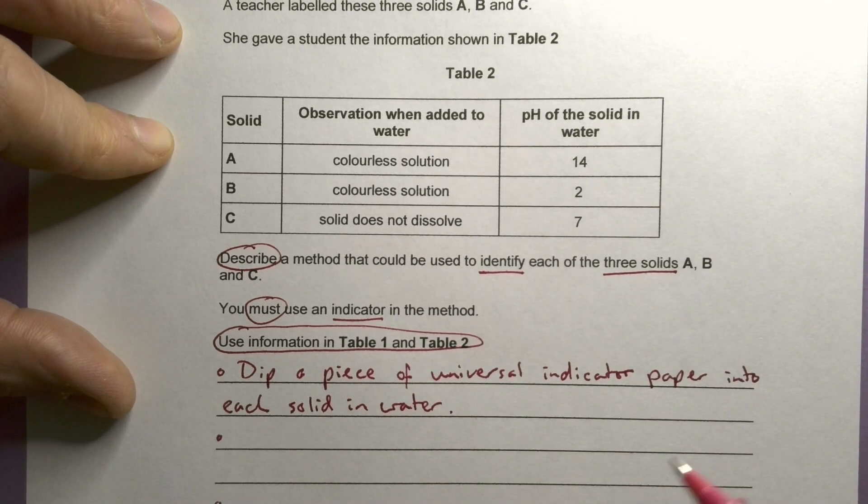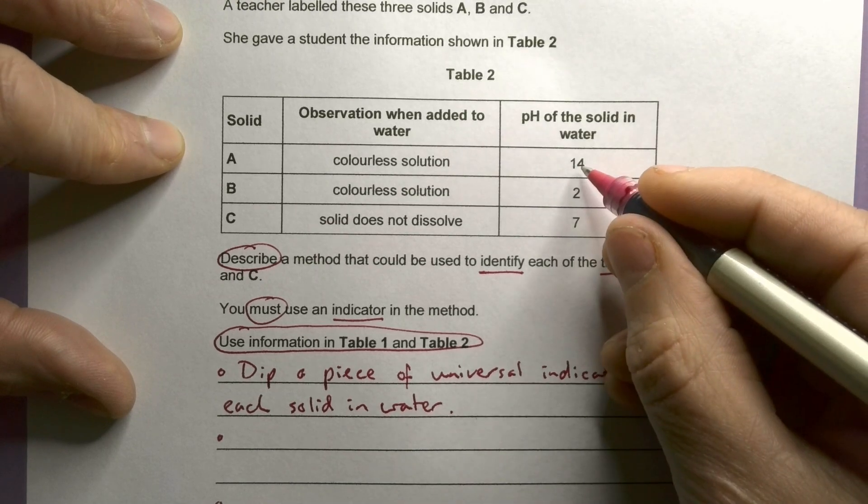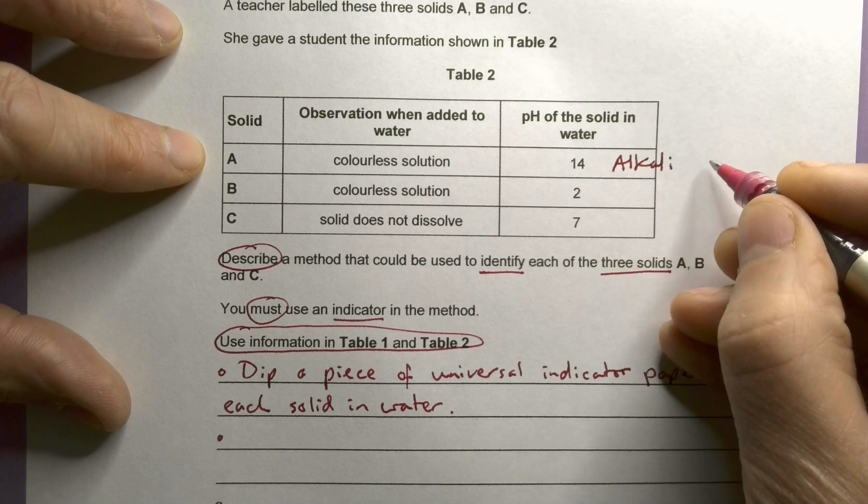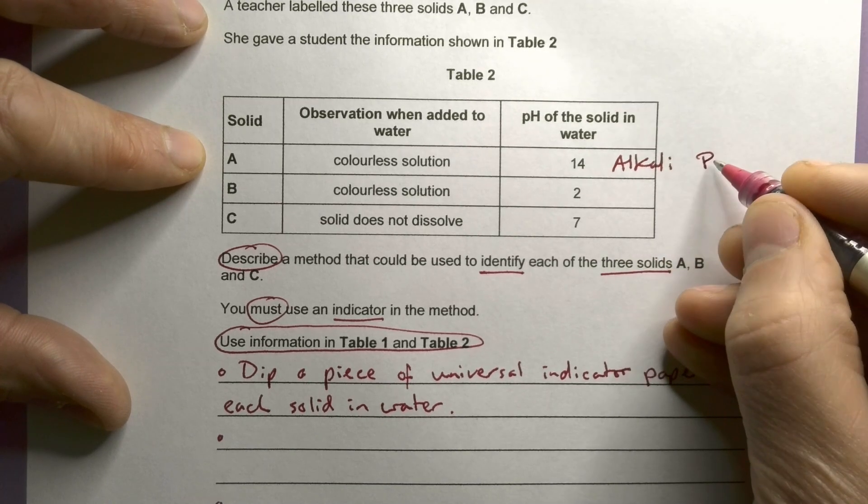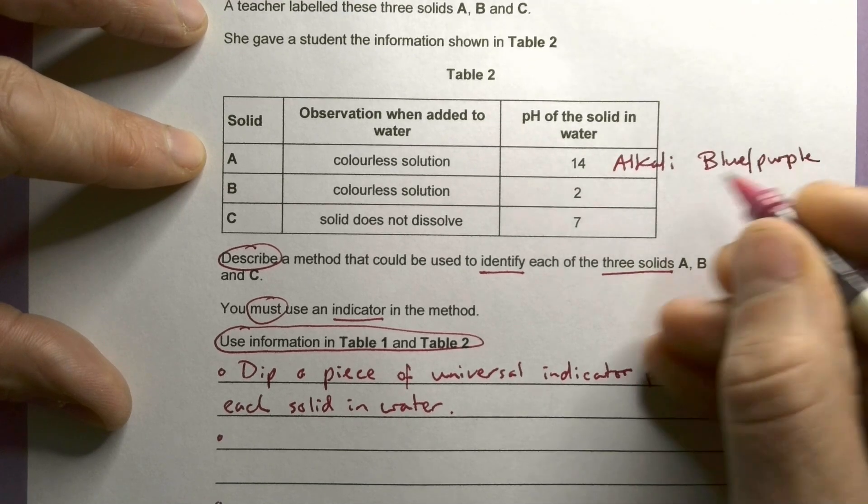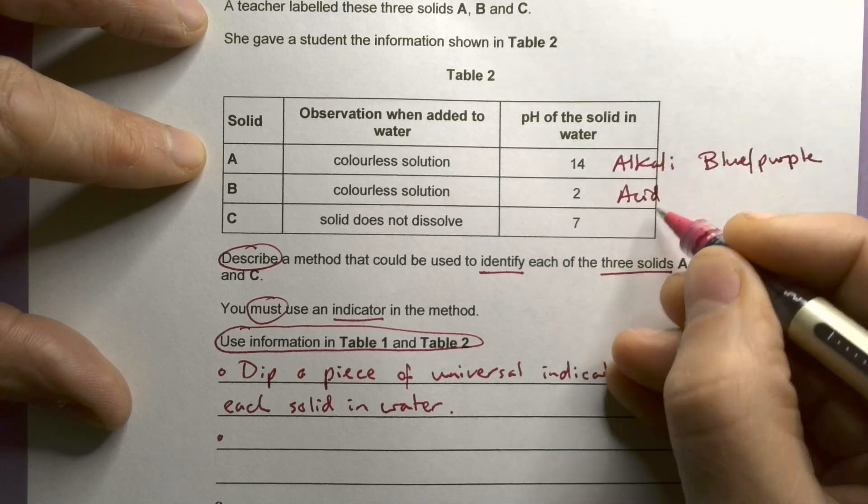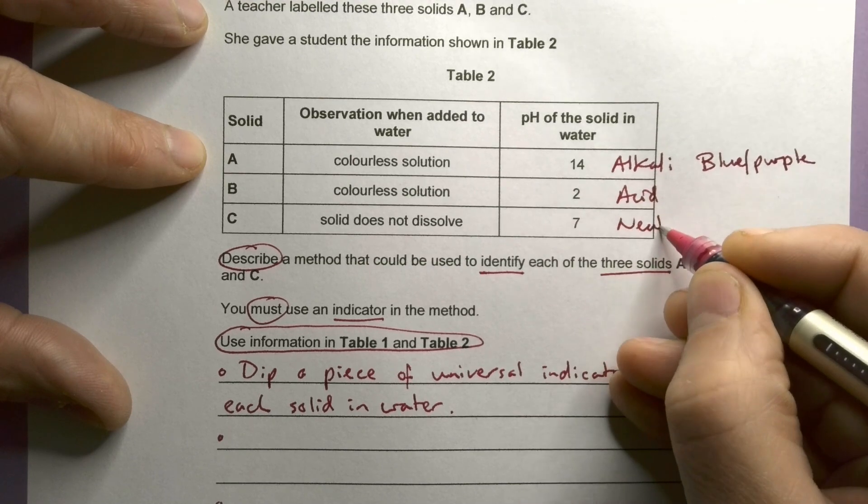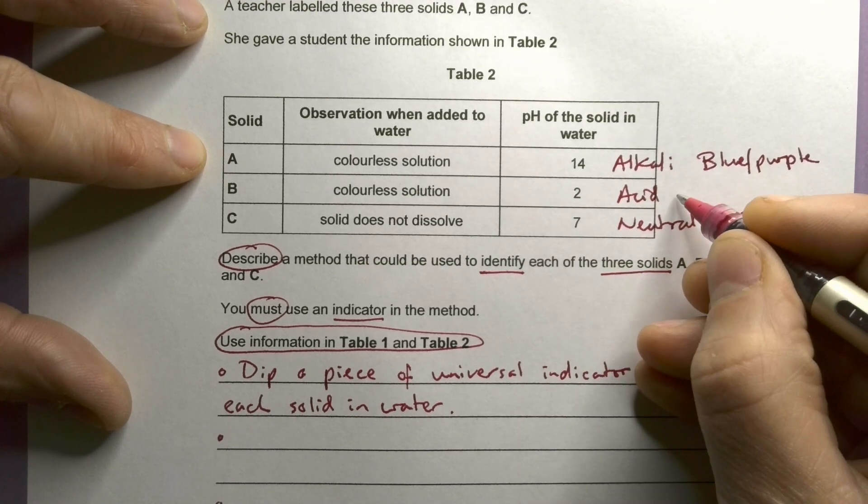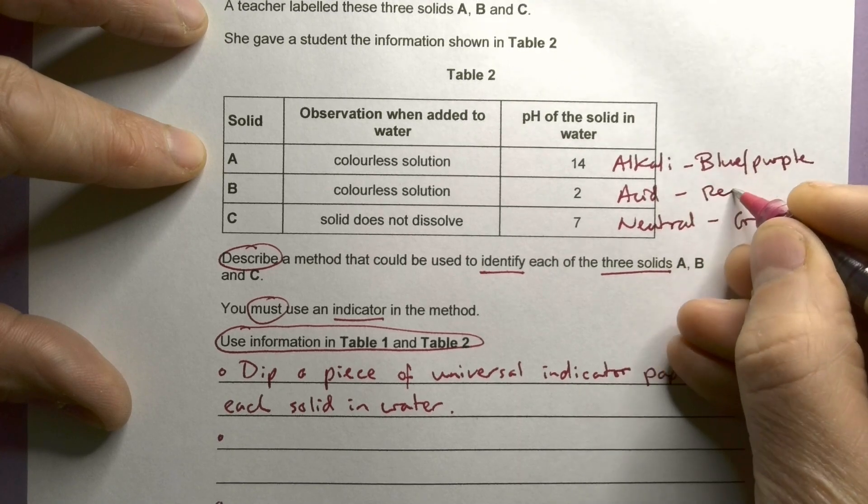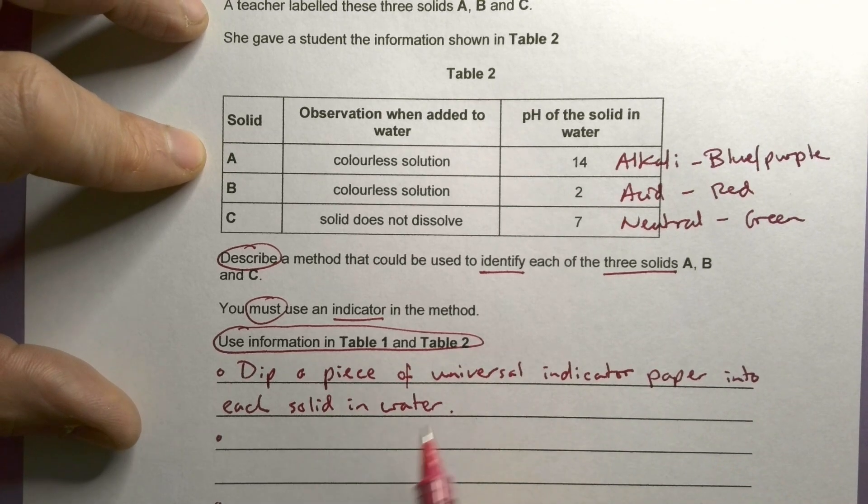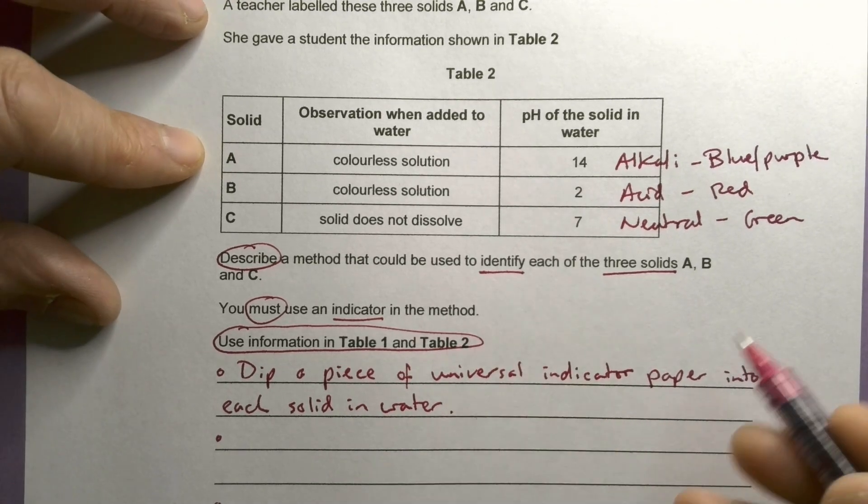Okay, and what do I know? Well, I know that this one's an alkali. So it's going to go blue or purple. I know this one's definitely an acid. This one's neutral. So we're going to get green. This one's going to be red. Okay, so the first bit is I'm going to dip a piece of universal indicator in. Then I'm going to say what I'm expecting to see.